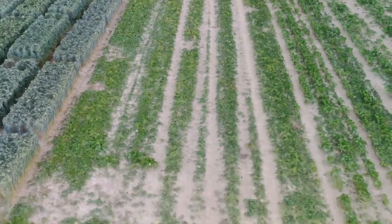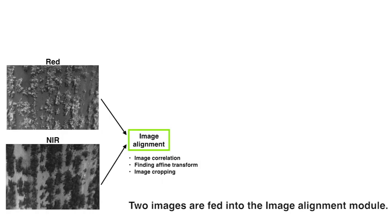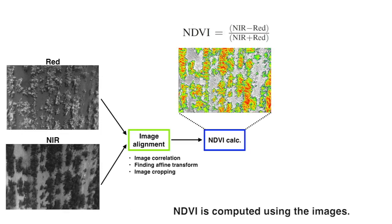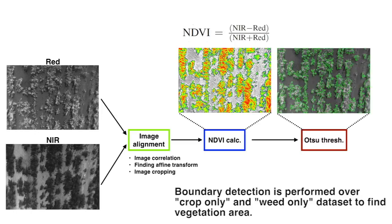We have collected three data sets. After the data collection, we extract NDVI from crop only and weed only data sets to create a training data set. The RED and NIR images are fed into an image alignment module. Then NDVI is calculated using the equation above the figure. Finally, boundary detection is performed over the extracted NDVI using an intensity histogram clustering algorithm.